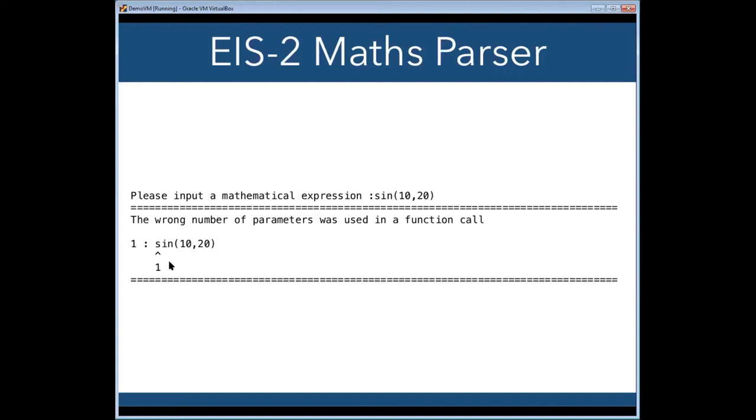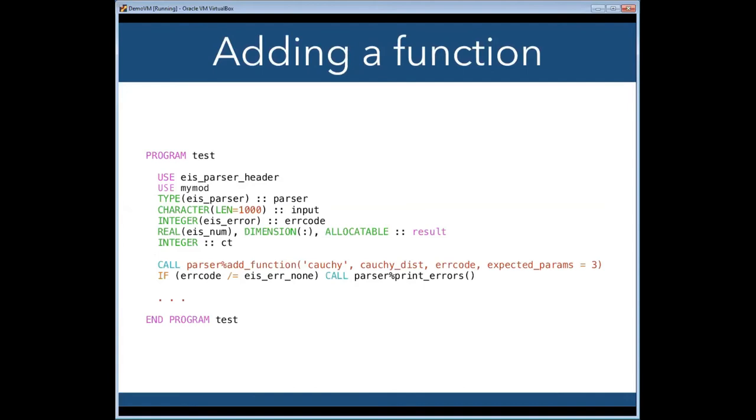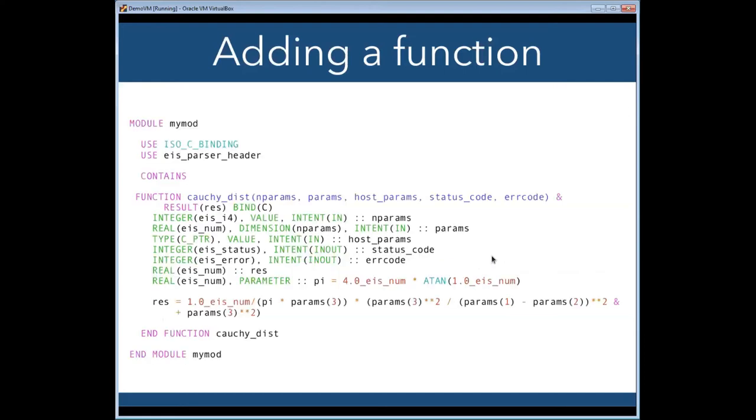So at the moment, what you have is basically a calculator. What if you want to add other things? Well, here, for example, is how I would add a function. I call the parser's add function method. I give it a name, Cauchy. I call what we call an action function. I say the error code, and I say how many parameters I expected to have. A Cauchy distribution takes three parameters, and here is the action function in a module. All the action functions for any functions, for any of those variables that can return a different value every time they're called, look the same. You'll notice they're bind C functions. These are bind C because it means that these functions can come from Fortran. They can come from C. They can come from any language you want. It also means you can use something like DLopen and DLsim to have runtime plugins if you want. But there it is. That's just implementing a Cauchy distribution, and I could then use that in an expression, and it would evaluate exactly as you'd expect.